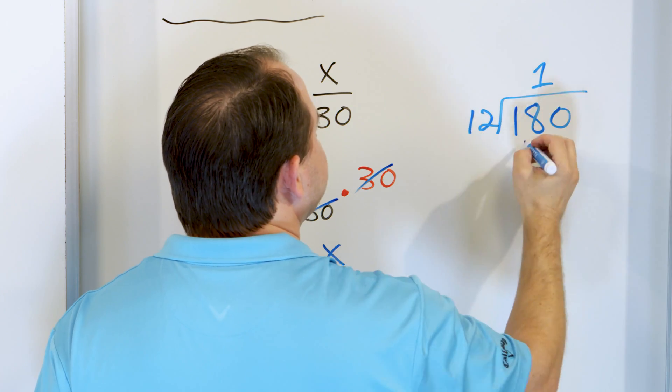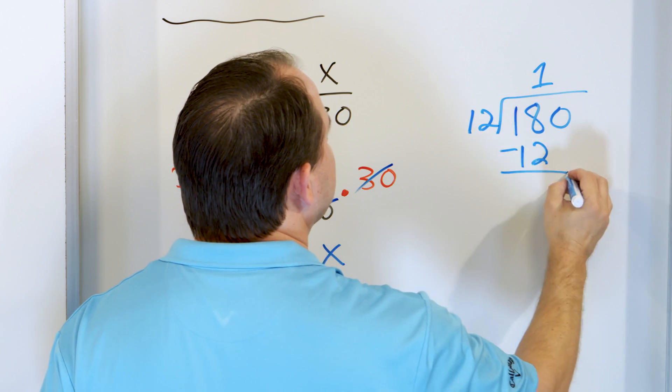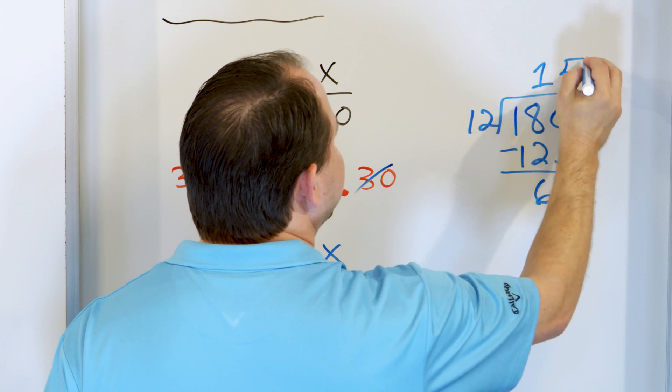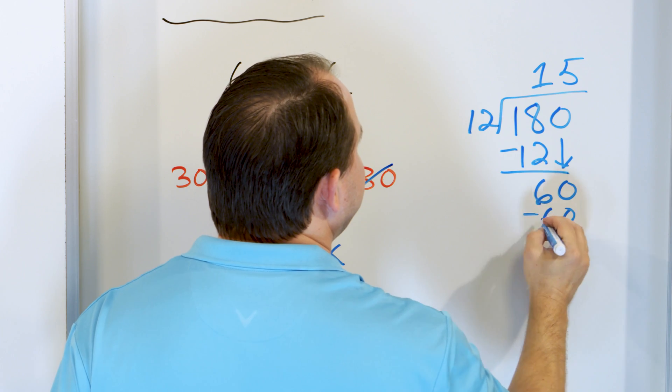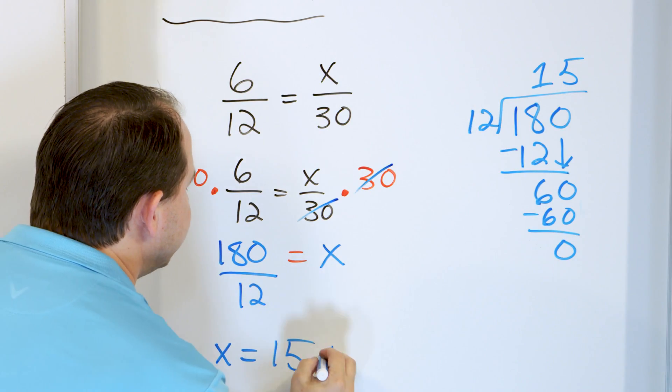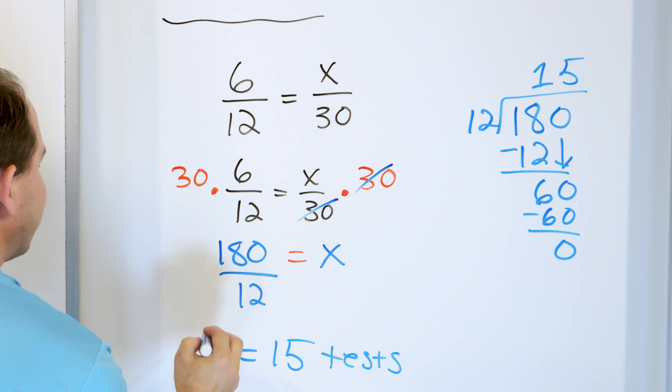1 times 12 is 12. Subtract, we get 6, drag the zero, and then 12 times what is 60? 12 times 5 is 60. Remainder is zero. So it goes 15 times, 15 tests. That's what she can grade in a 30-minute period.